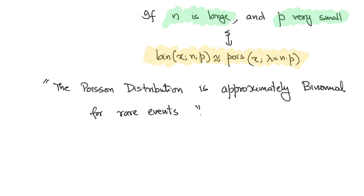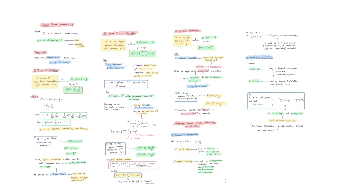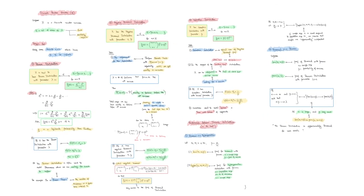To wrap up today's video, we have spoken about three important distributions: the Poisson distribution, the negative binomial distribution, and the geometric distribution. We also worked out the relationship between the binomial and the hypergeometric distribution in the limit, and the binomial and the Poisson distribution in the limit. Take care of yourselves, and I will see you around.